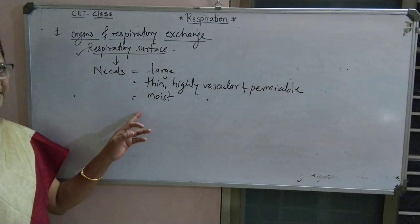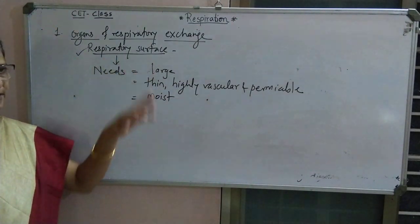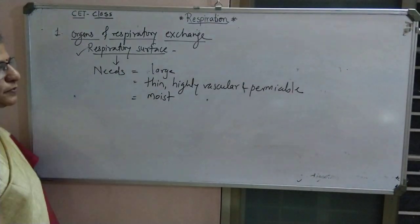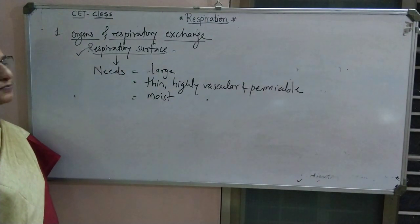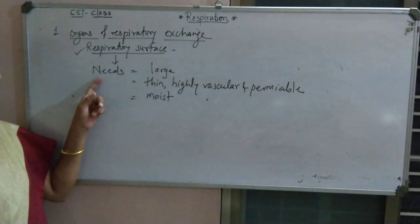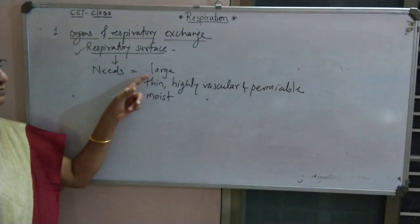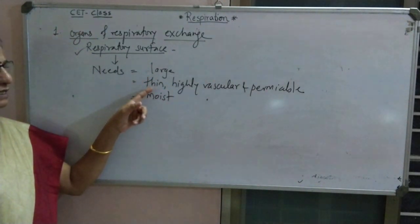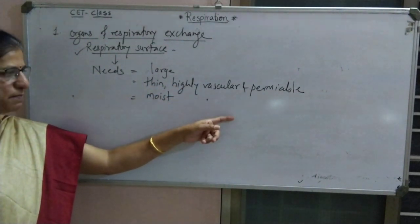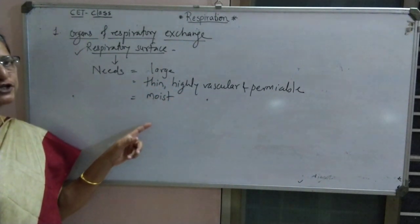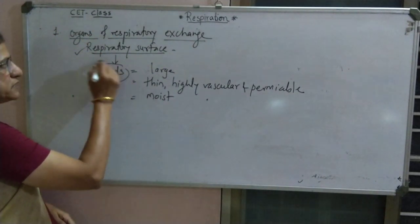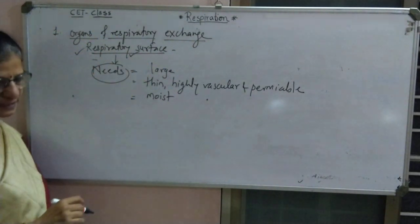The respiratory surface needs moistness. So, organs of respiratory exchange need respiratory surfaces. All respiratory surfaces in living organisms should be large, thin, highly vascular, permeable, and moist. These are the needs of the respiratory surface.